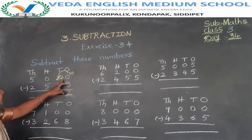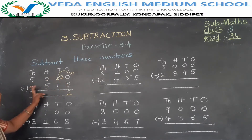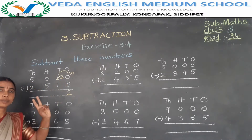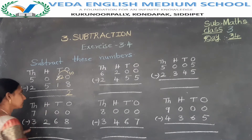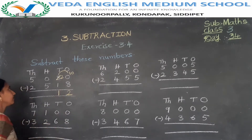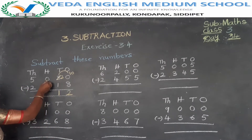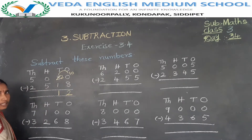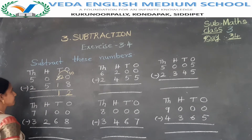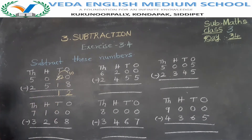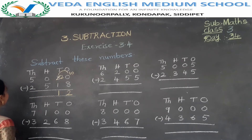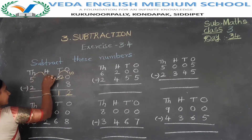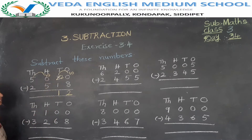In the tens place: 2 minus 1 equals 1. In the hundreds place: 0 minus 5 is not possible. 5 is bigger than 0, so now take a borrow from the thousands place to the hundreds place.